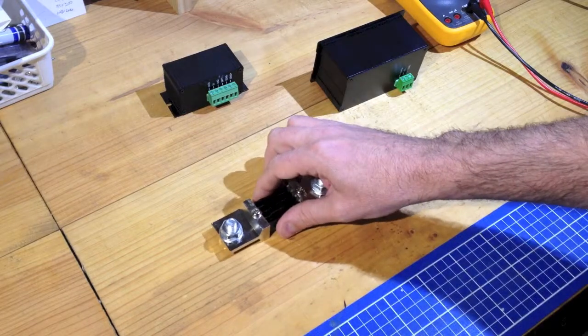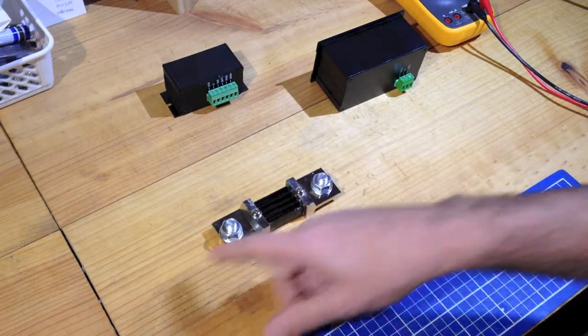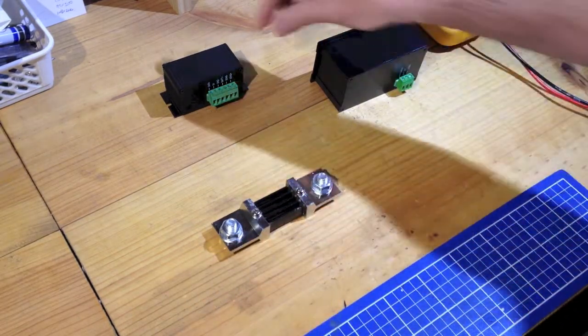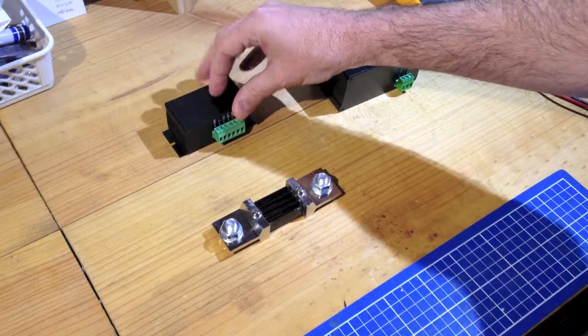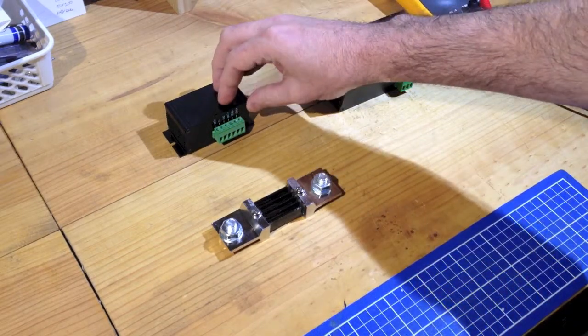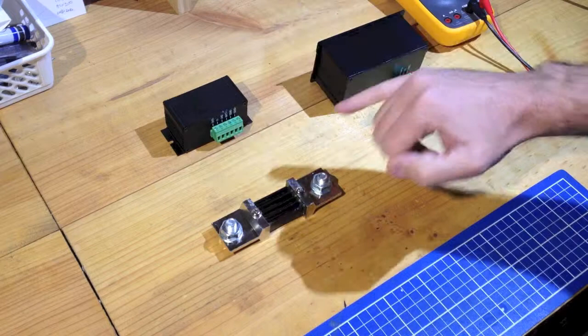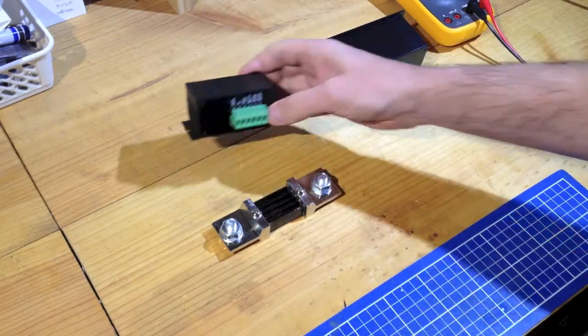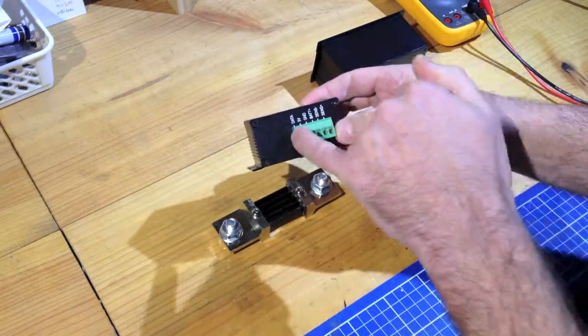So once we have that installed, let's imagine that's installed in the negative cable. We need to then wire up the wires for the sense unit, and we'll start from this end. You can see the labels indicate what all of them are.